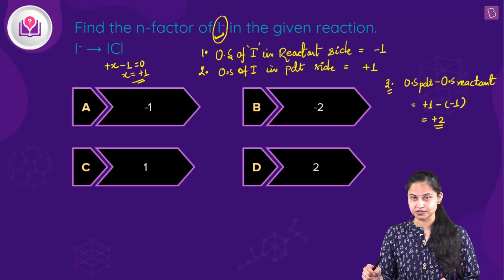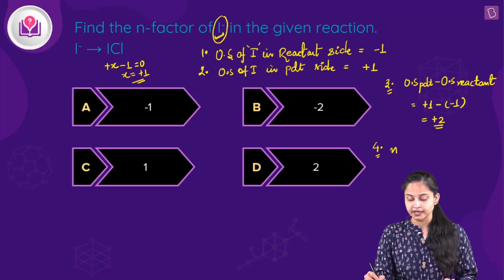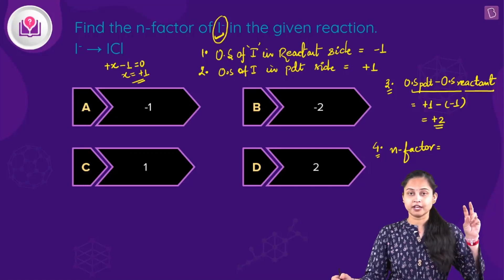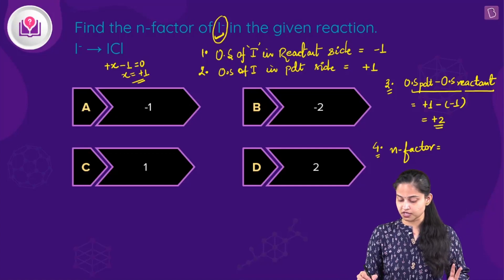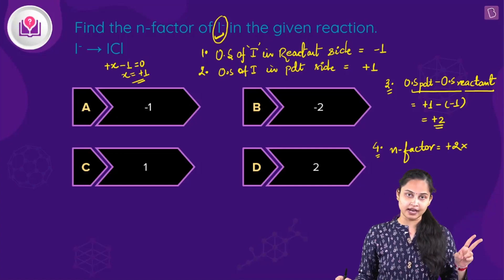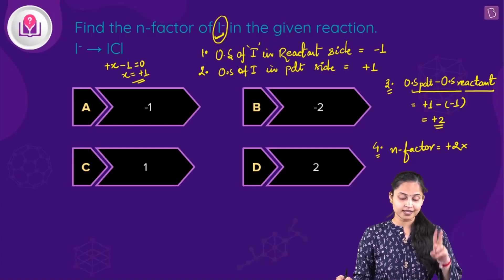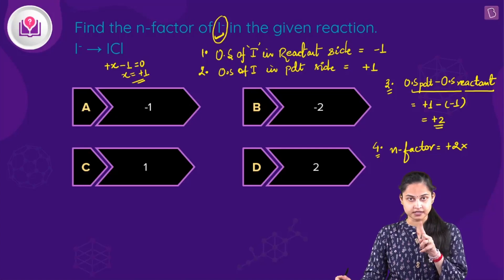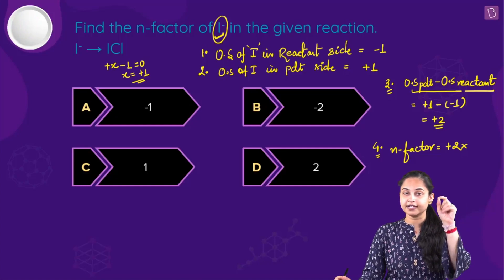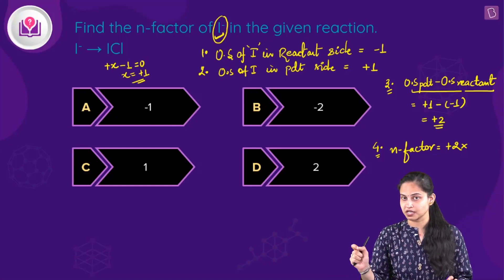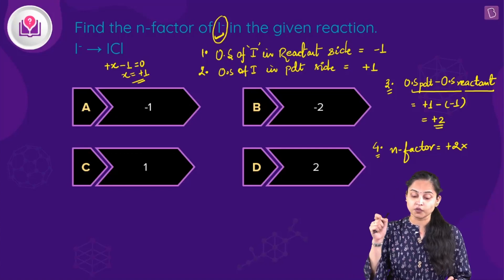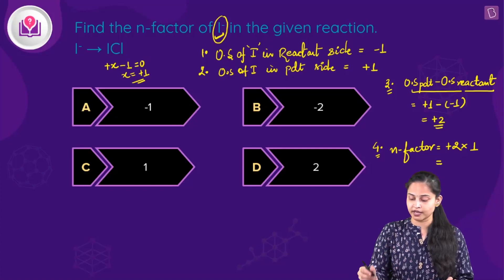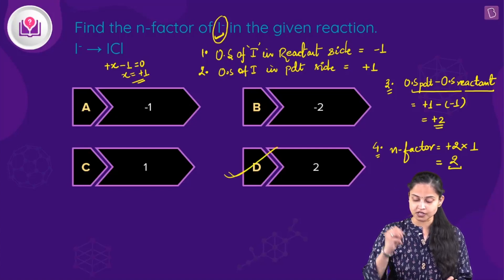The difference in magnitude of the two oxidation states is: (+1) − (−1) = +2. The N-factor equals this difference multiplied by the number of iodine atoms for which we calculate it. Since we have I⁻ with 1 iodine atom, N-factor = 2 × 1 = 2. Hence option D is the right answer.